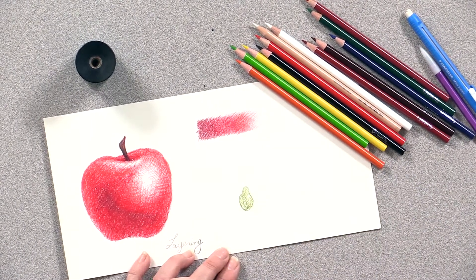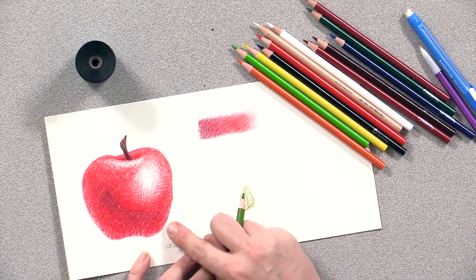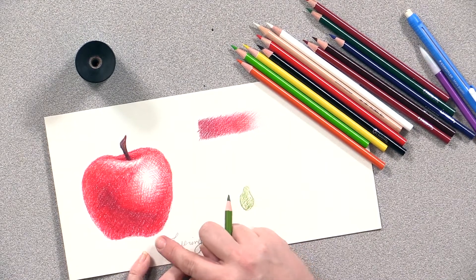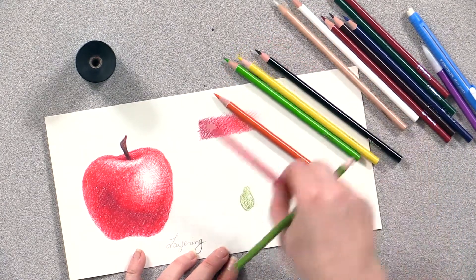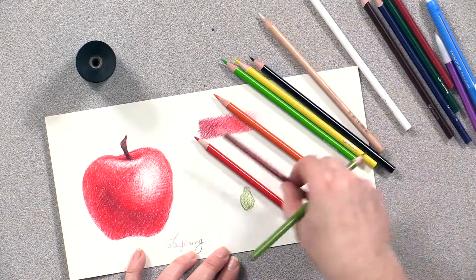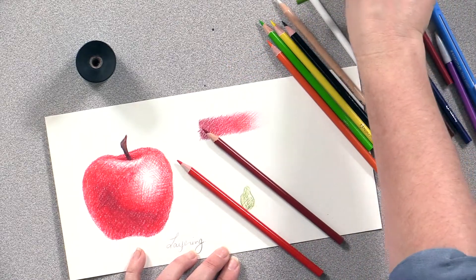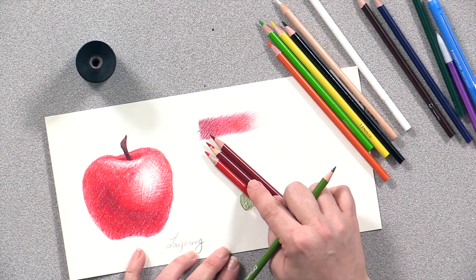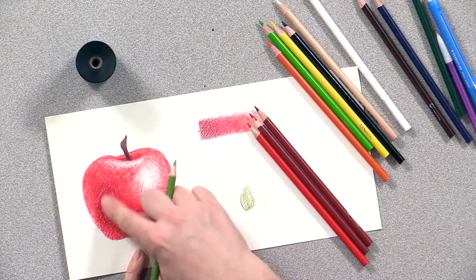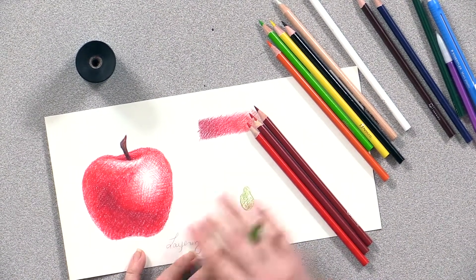So here I have a red apple. I've already gone in and done a ton of layering with three different values of red. I've got the NASCO 24 pack of colored pencil, which is a really nice variety. So I've got a lighter red, a medium red, and a darker red. I've layered those in to start to build my value structure.